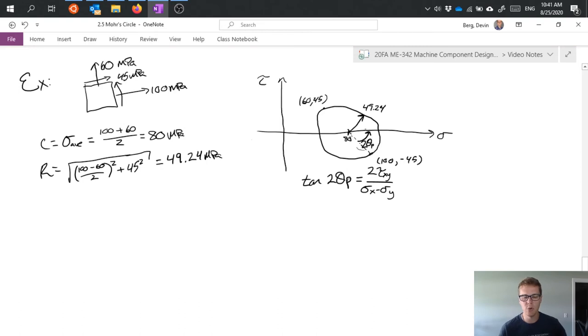Now in reality the triangle I'm using goes from one side up here 60, 45 down to the 100 minus 45. That's why we have 2 tau xy because it's positive negative so two of them total on the one side and then it's the difference between those two values is my x portion.